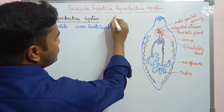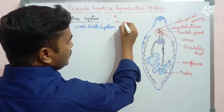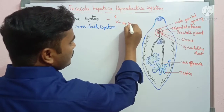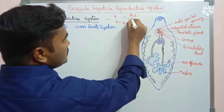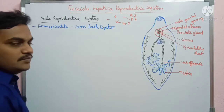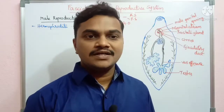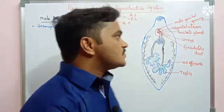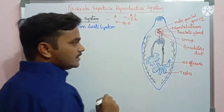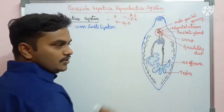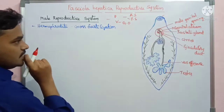On the ventral surface of Fasciola hepatica, one genital opening is present. There are two suckers: anterior and posterior. The anterior sucker is called the oral sucker, and the posterior one is called the acetabulum, which is located in the middle of the body.